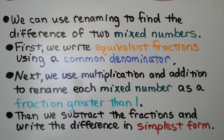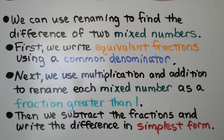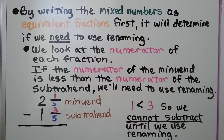We can use renaming to find the difference of two mixed numbers. First, we write equivalent fractions using a common denominator. Next, we use multiplication and addition to rename each mixed number as a fraction greater than 1. Then we subtract the fractions and write the difference in simplest form. By writing the mixed numbers as equivalent fractions first, it'll determine if we need to use renaming.